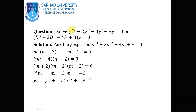Third example: y''' - 2y'' - 4y' + 8y = 0. This can be written as (D³ - 2D² - 4D + 8)y = 0, and the auxiliary equation is m³ - 2m² - 4m + 8 = 0. By factorization, taking m² common from the first two terms: m²(m - 2) - 4(m - 2) = 0.